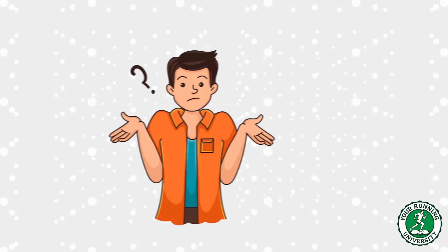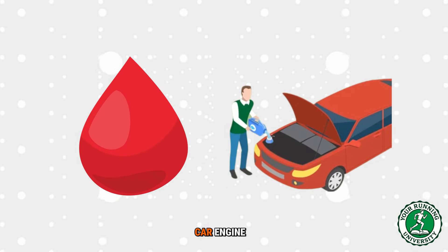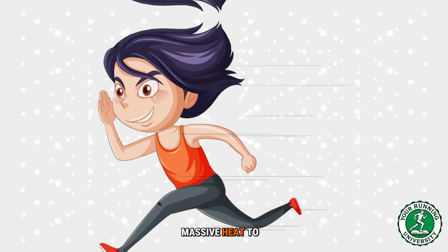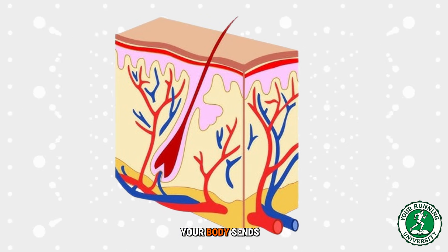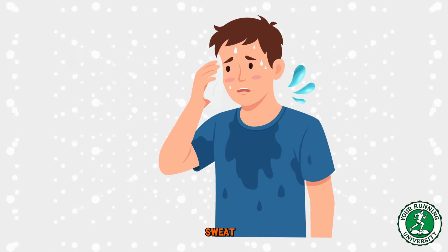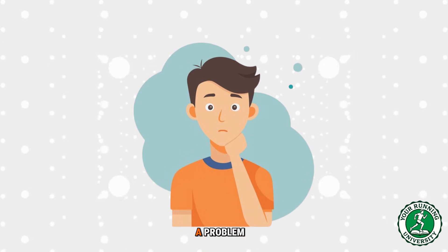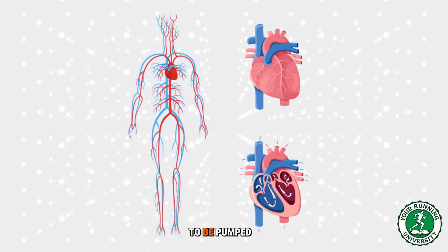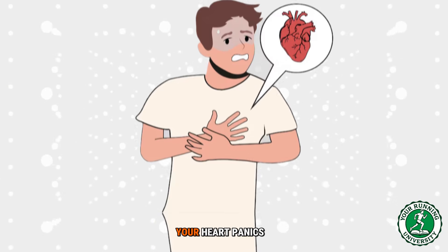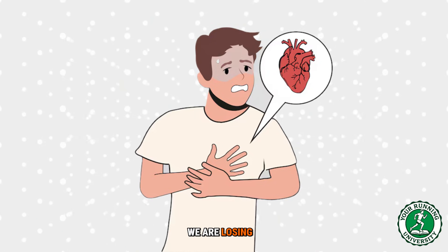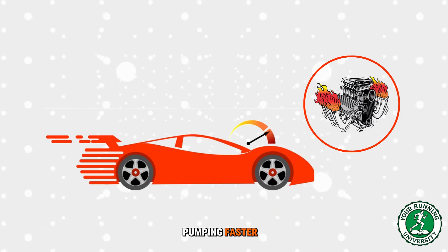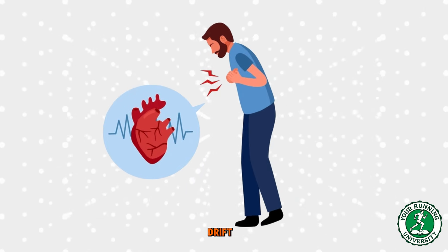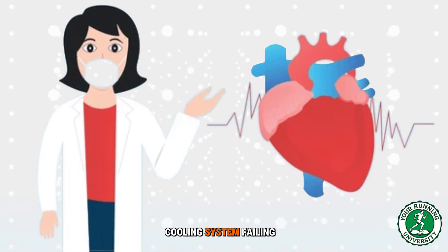Why? Think of your blood like the coolant in a car engine. When you run, your engine produces massive heat. To cool you down, your body sends blood to your skin to release that heat — sweat. But this creates a problem. The blood traveling to your skin is not returning to your heart to be pumped to your muscles. Your heart panics: we are losing pressure. So it starts pumping faster just to keep the car moving at the same speed. That is cardiac drift — it is the sound of your cooling system failing.